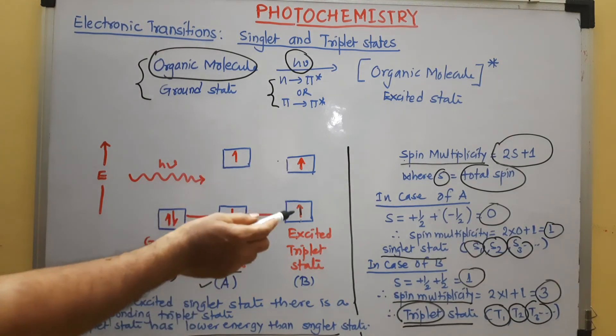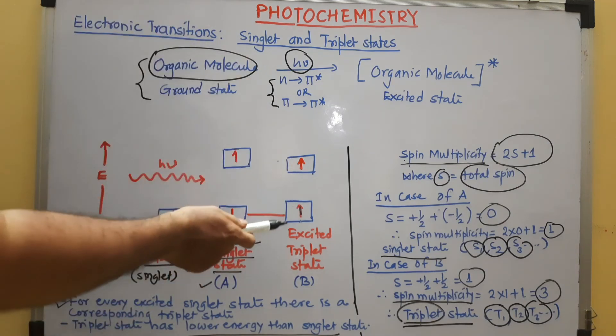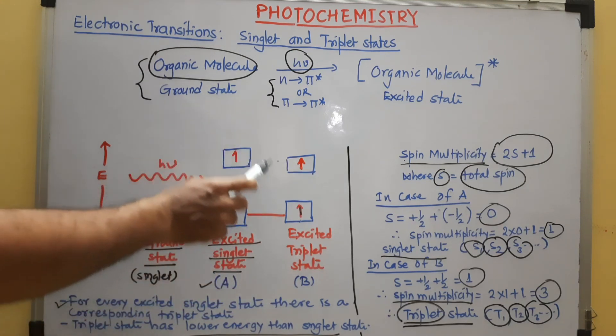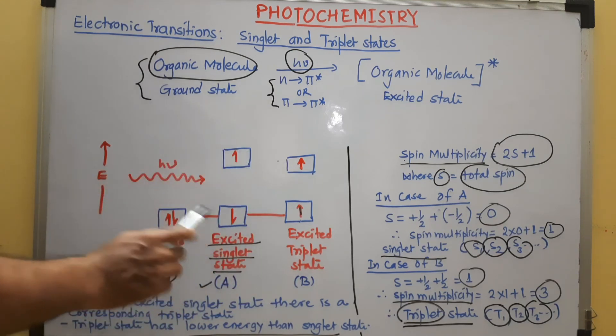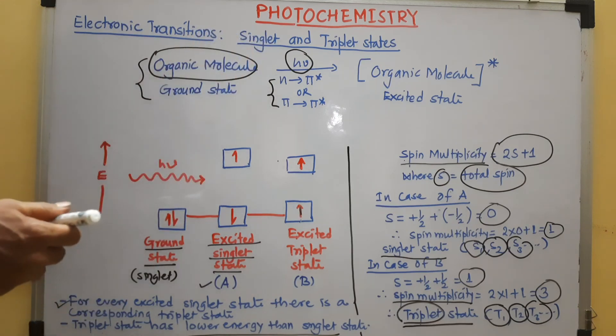Since both unpaired electrons are there in triplet state, this is paramagnetic and the singlet state is diamagnetic in nature. So, this much information is sufficient for the singlet and triplet state. Thank you.